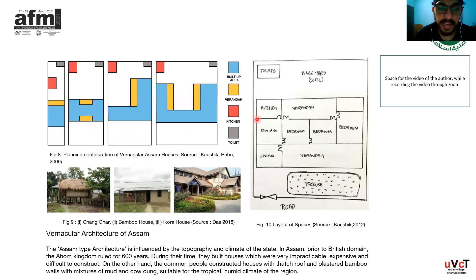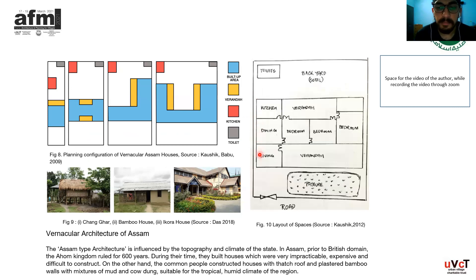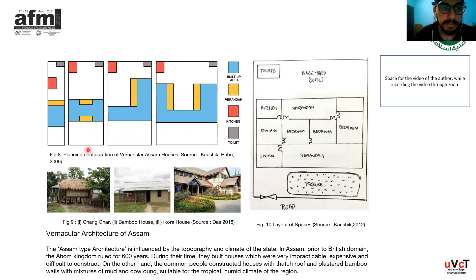Let's come to the vernacular architecture of Assam. The Assam type of architecture is influenced by the humid climate and topography of the state. The Ahom Kingdom, which ruled for more than 600 years, had a very impractical, expensive, and difficult-to-construct kind of architecture. But common people used bamboo, thatch, and mud to construct their houses using vernacular methods. These are some planning configurations of houses found in rural areas.